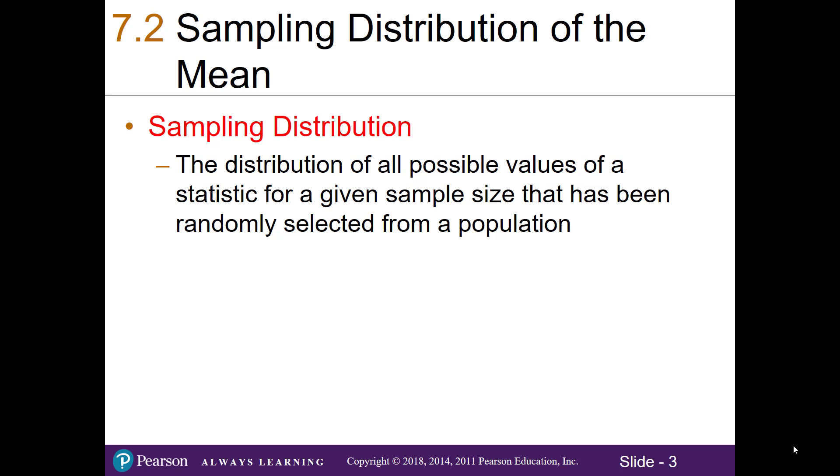Similarly, when we're working with sampling distributions, we take the distribution of all possible values of a statistic, say the sample mean, for a given sample size that has been randomly selected from the population. In other words, if we took all possible random samples of a particular size and calculated the sample mean for each one and then graphed it into a histogram, we would get a sampling distribution.